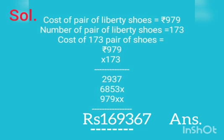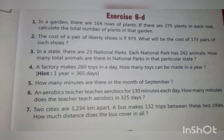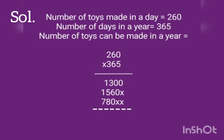So this is our answer in rupees. Next question. A factory makes 260 toys in a day. How many toys can be made in a year? In a day means 1 day, in a year means 1 year. Solution. Number of toys in a day is equal to 260. Number of days in a year is equal to 365.